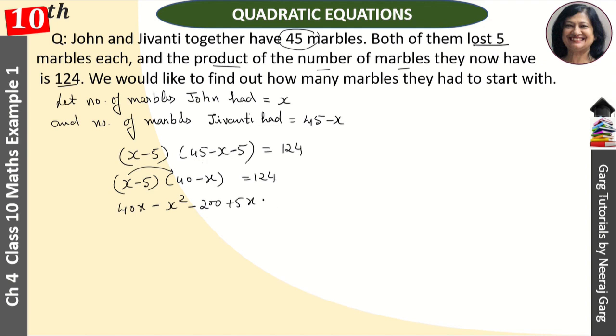And 124 is also on left hand side. So minus 124 is equal to 0. We have minus x square and 40x plus 5x means plus 45x, and minus 324. That is equal to 0.